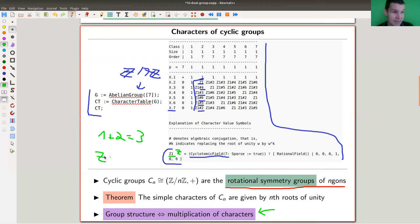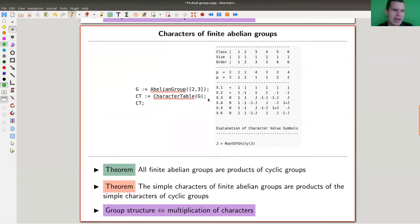Z times, so plus is turned into times here, z squared equals z cubed. Right? So this is what happens here. So multiplication and addition are kind of matched under this correspondence between characters and elements of the group.